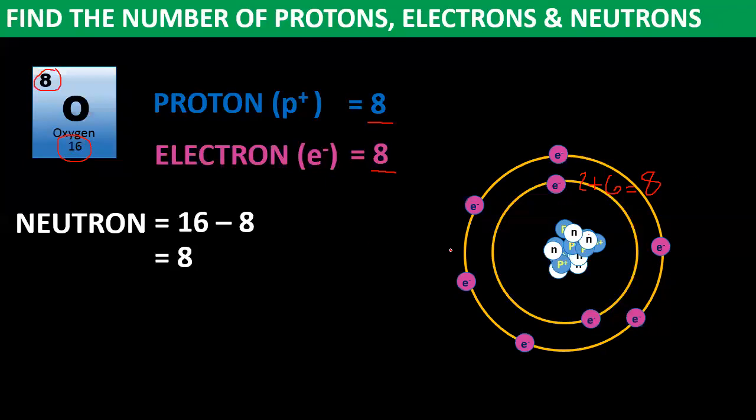So this is the valence electrons — the 6 electrons on the outside in the second energy level are called the valence electrons of the oxygen atom.